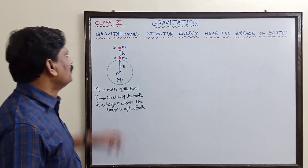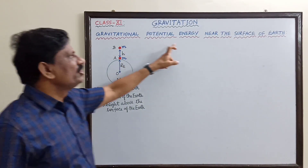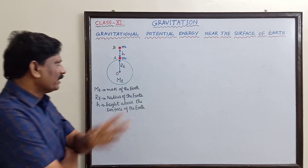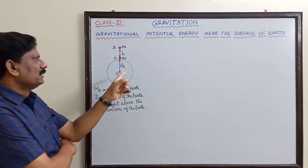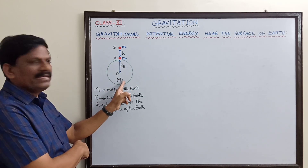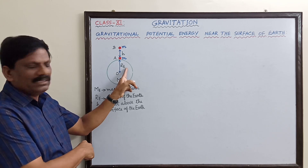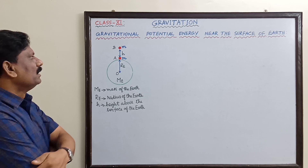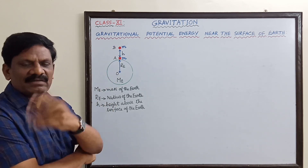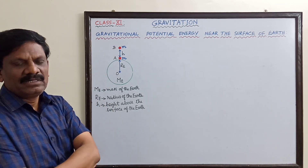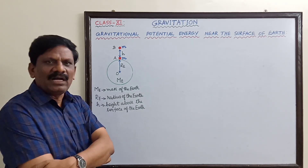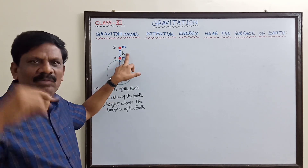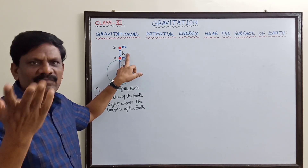Hi students. Gravitational potential energy near the surface of Earth. Look at this picture — the Earth has mass M_e and radius R_e. On the Earth's surface I have chosen a point A, and another point B is at a height h above the surface of the Earth. What is the potential energy of a body of mass m at this height h above the surface?